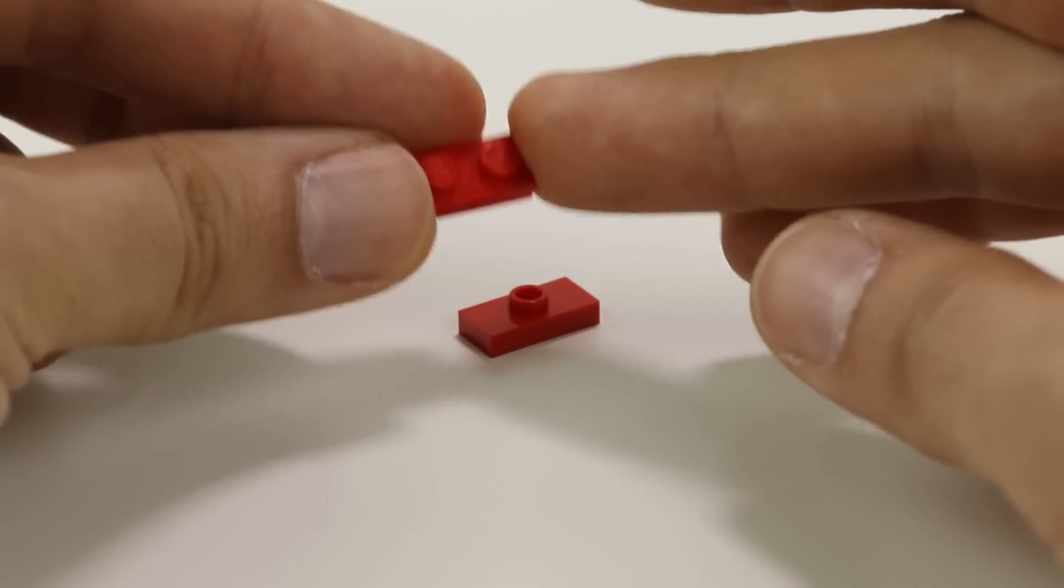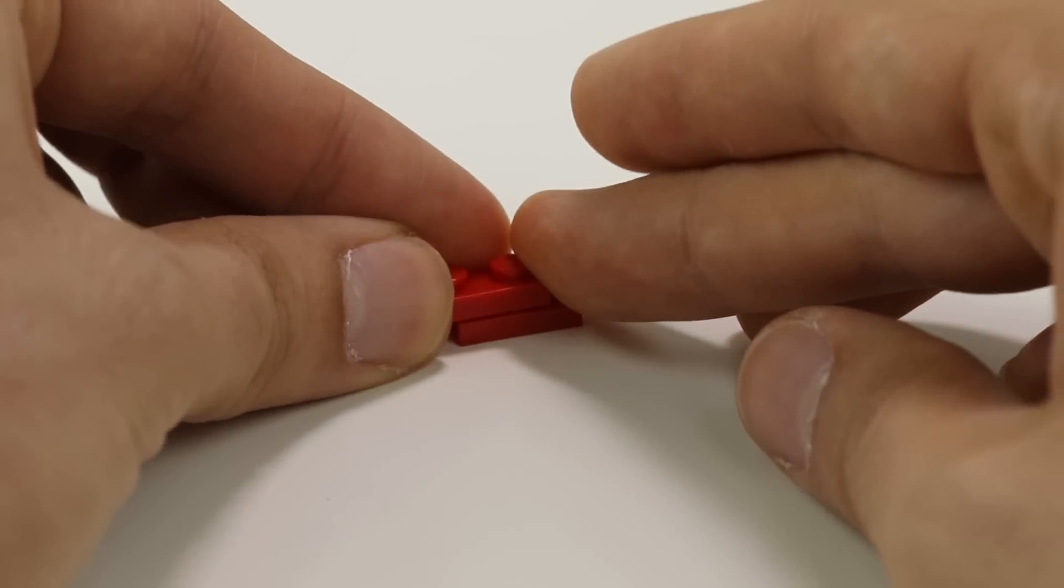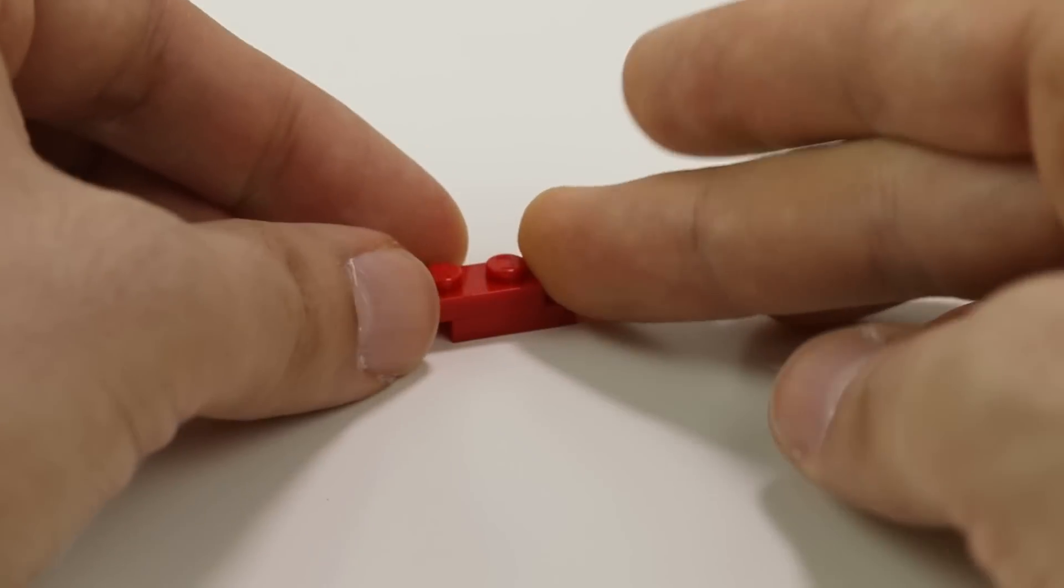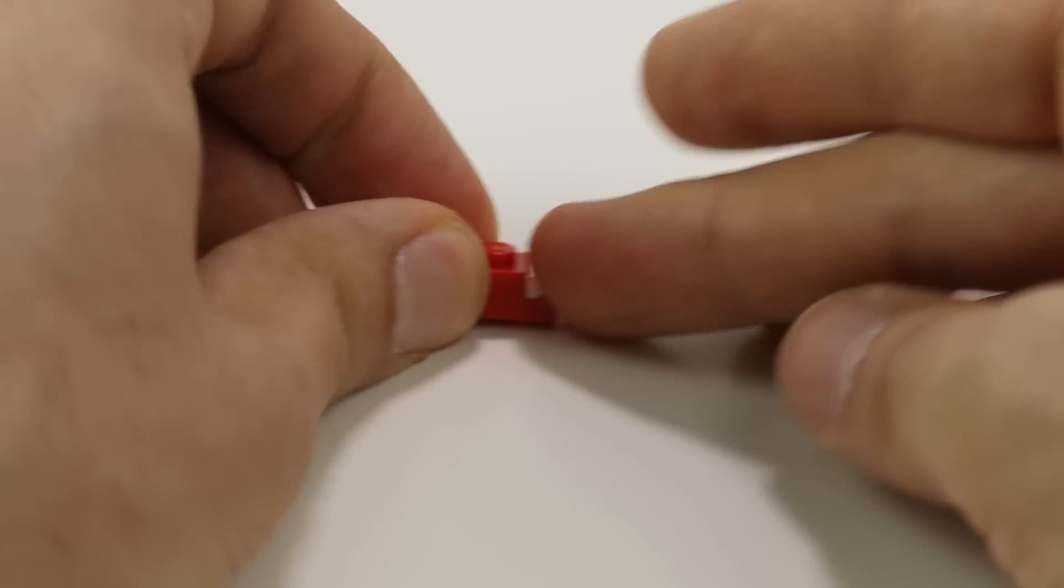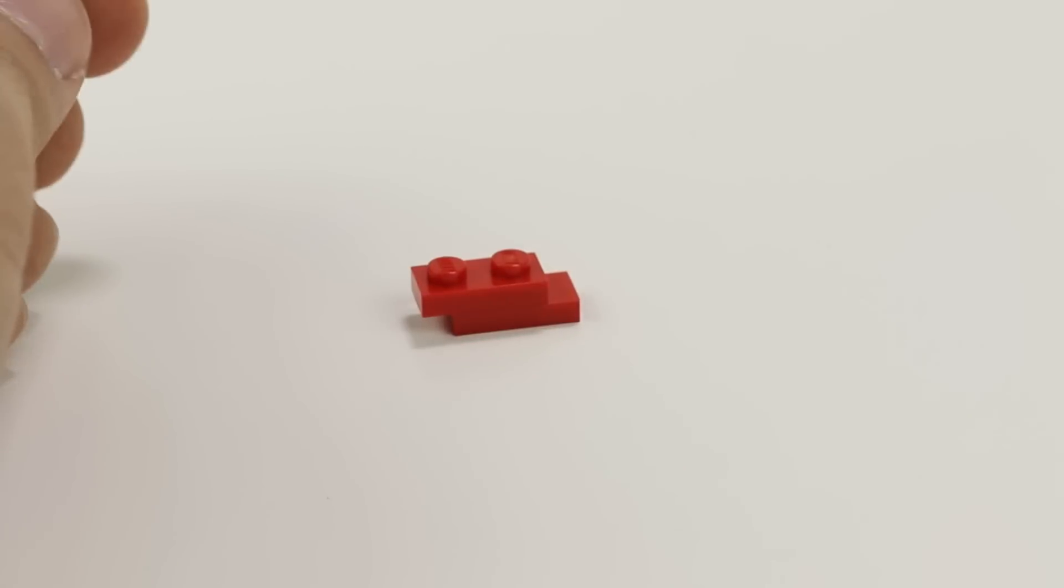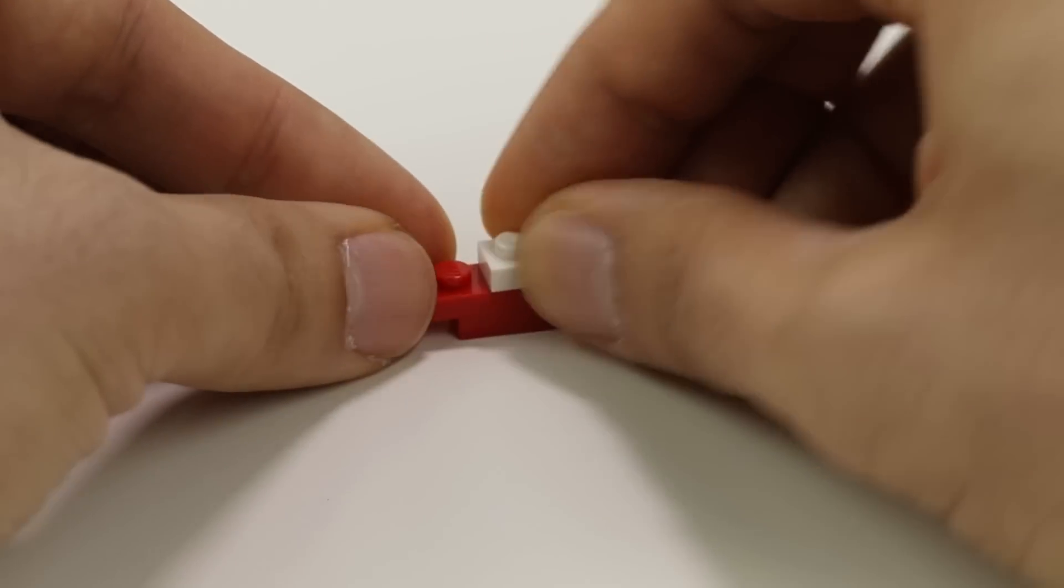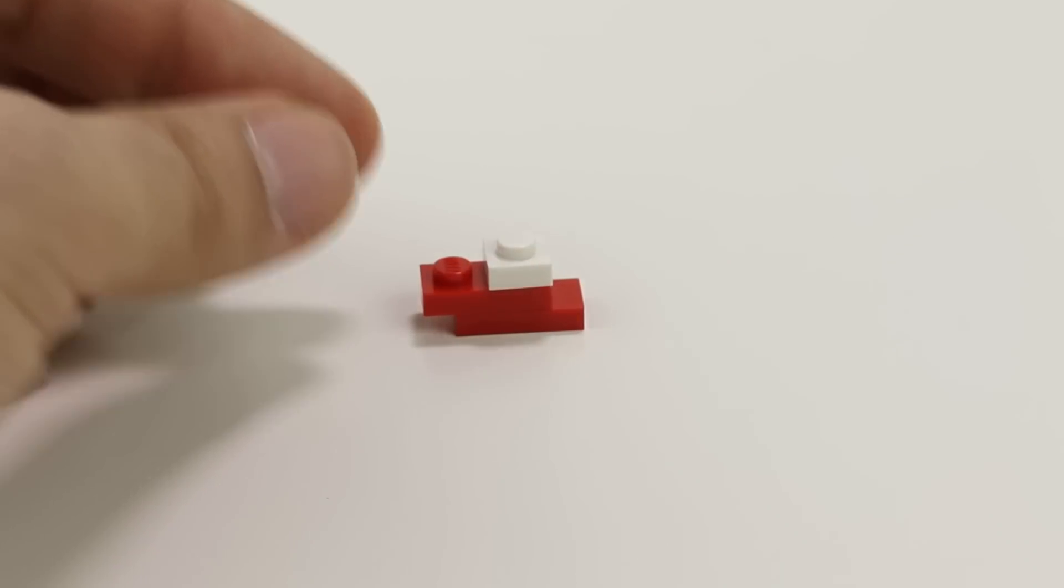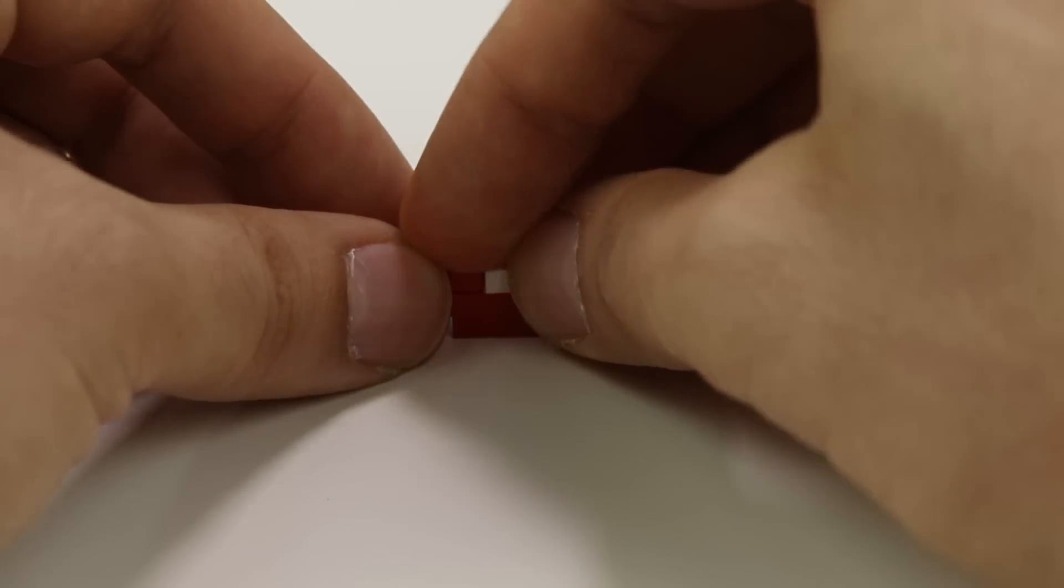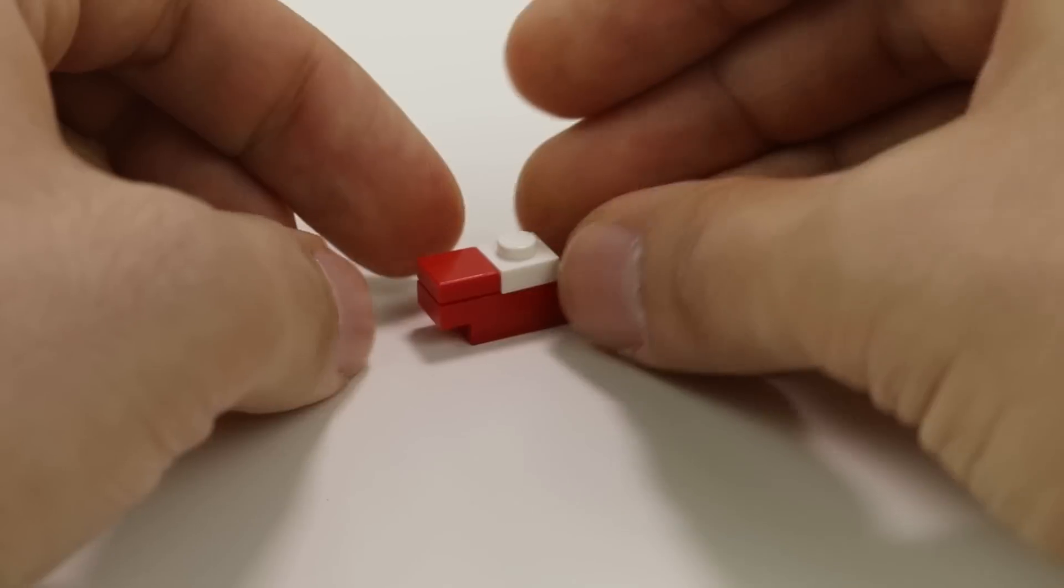So for shape number one, we're going to start with a 1x2 offset plate. We're going to put a 1x2 red plate on top of that, just like that, so that the stud is offset by one half. Then we're going to add a 1x1 white plate and a 1x1 red tile. So that's the first foot.